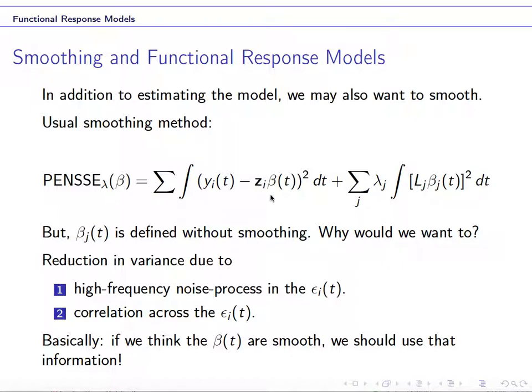So to control the smoothness of beta of t, we will add a roughness penalty as we do before. So here, we will add a roughness penalty on the beta of t.